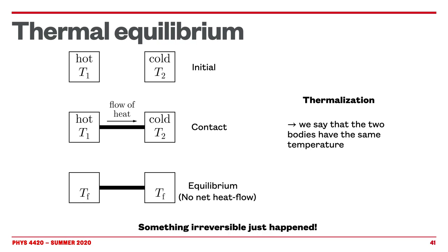Something very important to note is that something irreversible just happened. If you take two systems at different temperatures, there will be thermalization until the two systems have the same temperature. How do we know what temperature we started with? We can't, because the system is not reversible — thermalization is not reversible. We will talk much more about reversible processes as we move along this course.